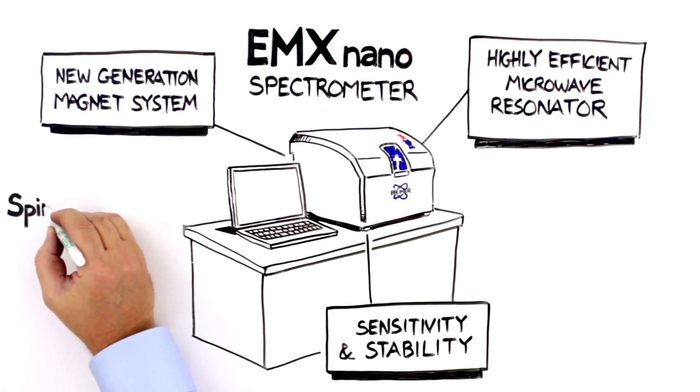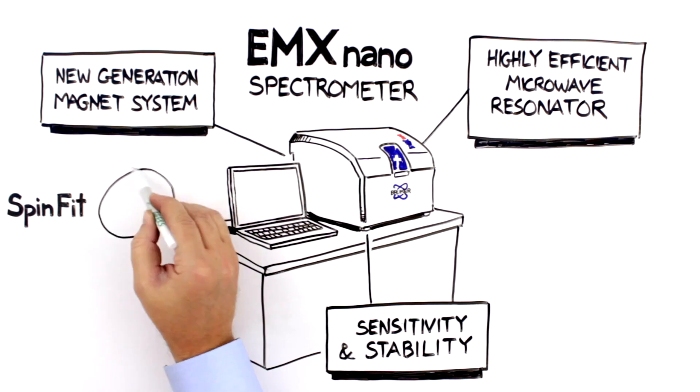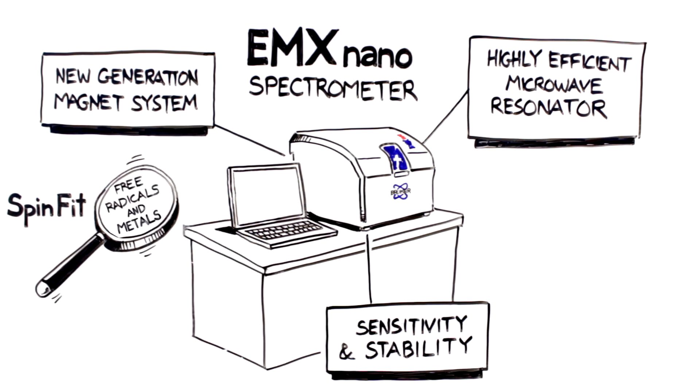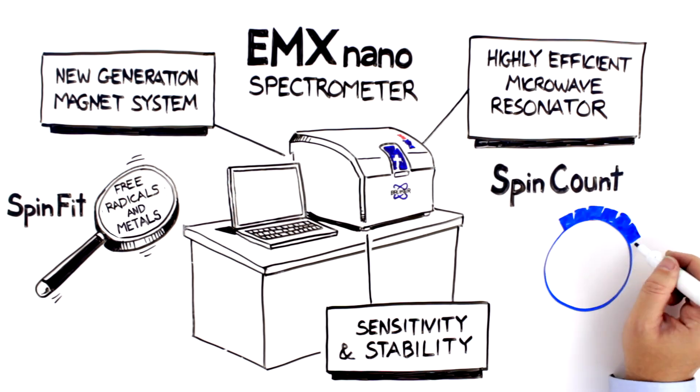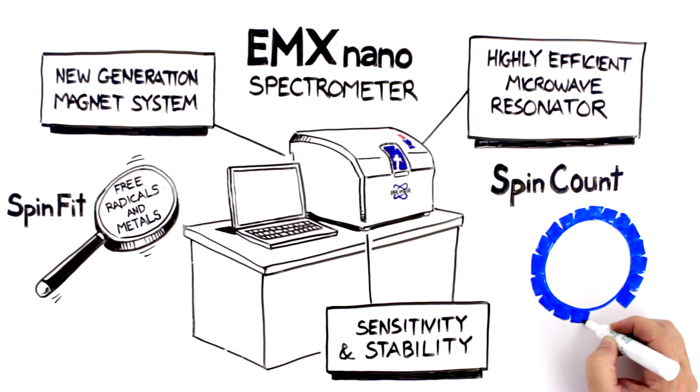Bruker's spectrum simulation module called spin fit makes short work of identifying free radicals and transition metals. With a fully calibrated instrument and Bruker's spin counting software module, spin count, EPR quantification is as straightforward as it can be.